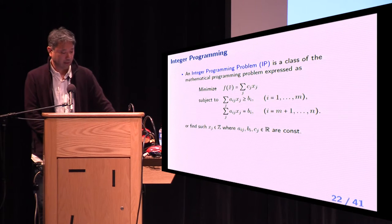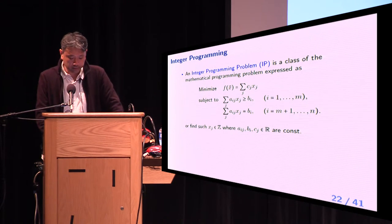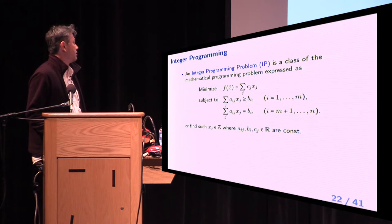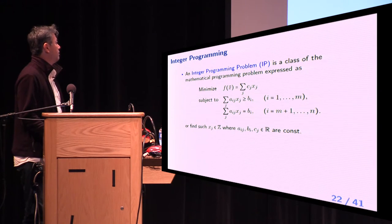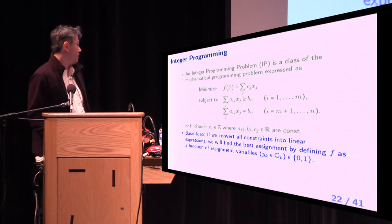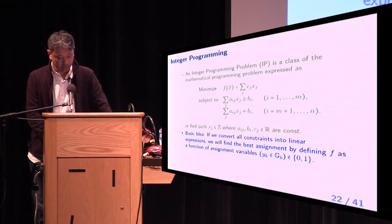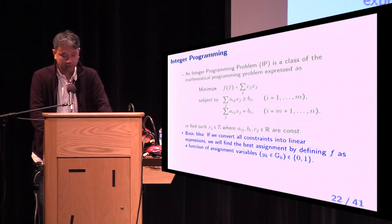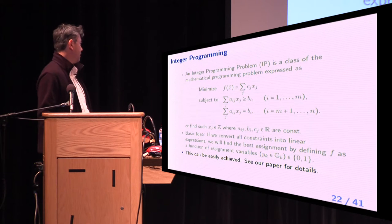Now, as you know, an integer programming problem is a class of the mathematical programming problem expressed as minimize linear function f(x) subject to linear constraints, or find such integer x where a, b, c are constant real numbers. Our basic idea is quite simple and straightforward. If we convert all constraints into linear expressions, we will find the best assignment by defining f as a function of assignment variables.